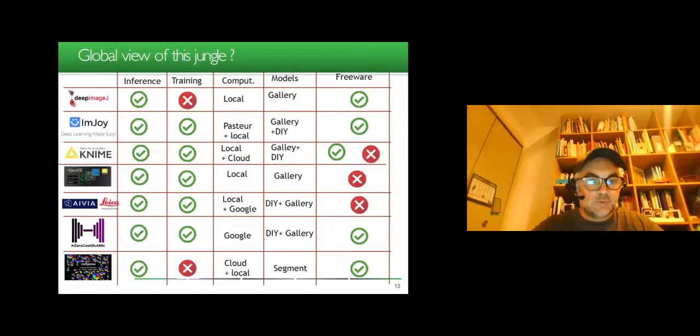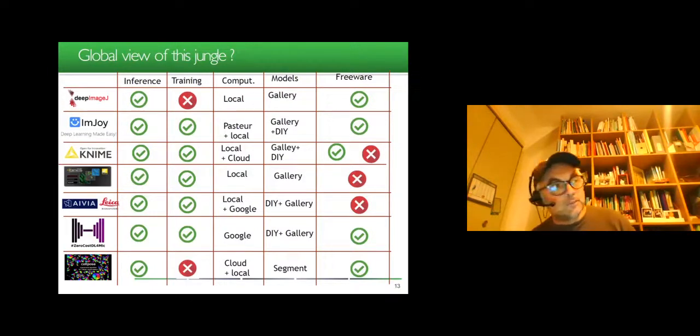A global view of this jungle is this way. For some you can do only the inference, meaning using them. For some of them you can use for training. Computation can be local or can be on the cloud. These clouds can be public or private. You can have galleries of models or do-it-yourself code, meaning adapting to your own images. It can be freeware, or it can be software for which you have to pay for the access. Unfortunately, most of them don't provide a generic classification problem because maybe these are simpler architectures than segmentation or denoising problems, and also that in microscopy we may have images which don't have the same size as the standard models that we find in computer vision for outside the microscopy world.